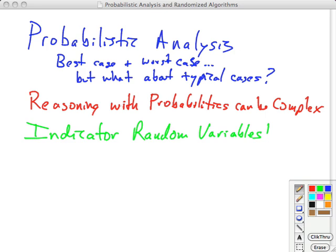So that's going to require probabilistic analysis, which is reasoning about the runtime of algorithms based on what we know about the distribution of the possible inputs to the algorithm. But reasoning with probabilities can be very complicated. But we're going to see that we have a method called indicator random variables that makes this kind of analysis much easier.